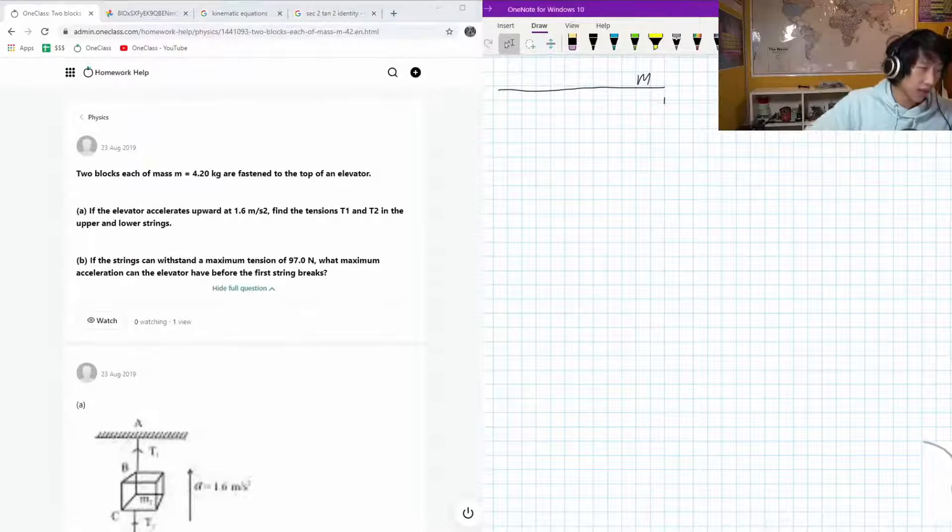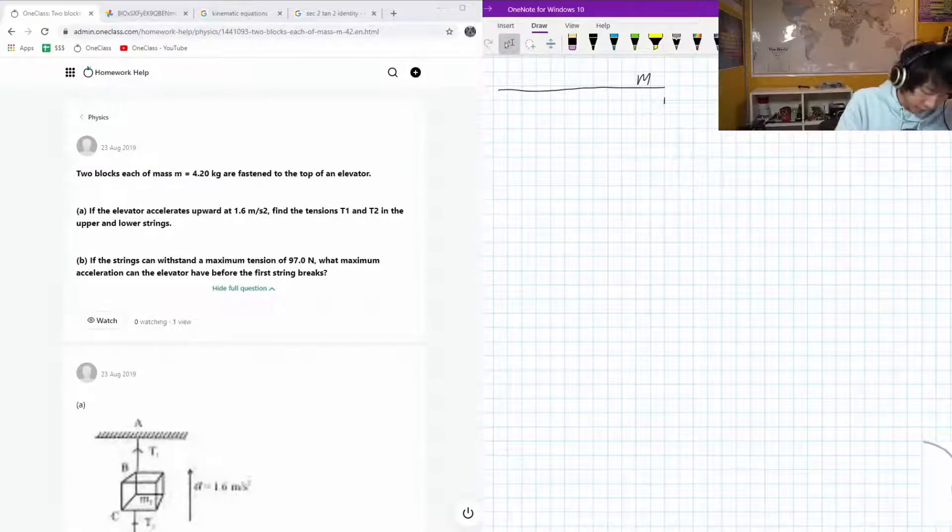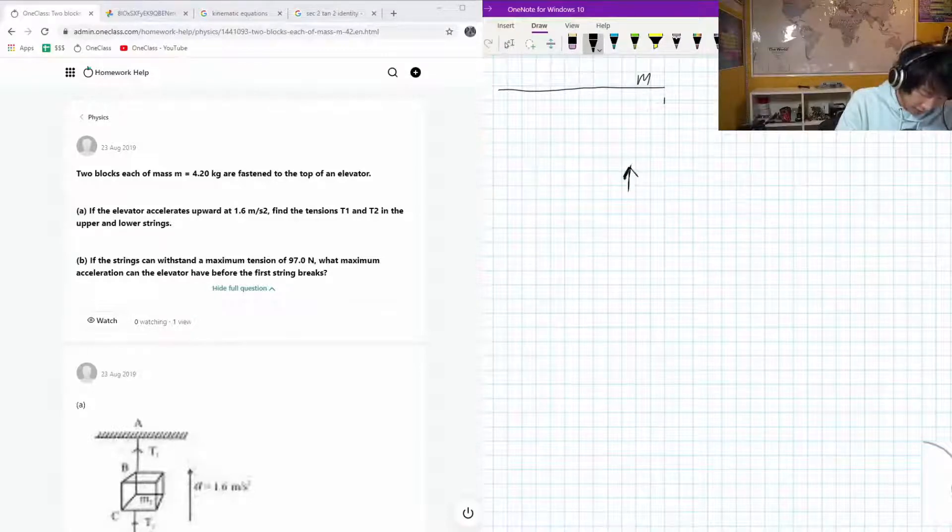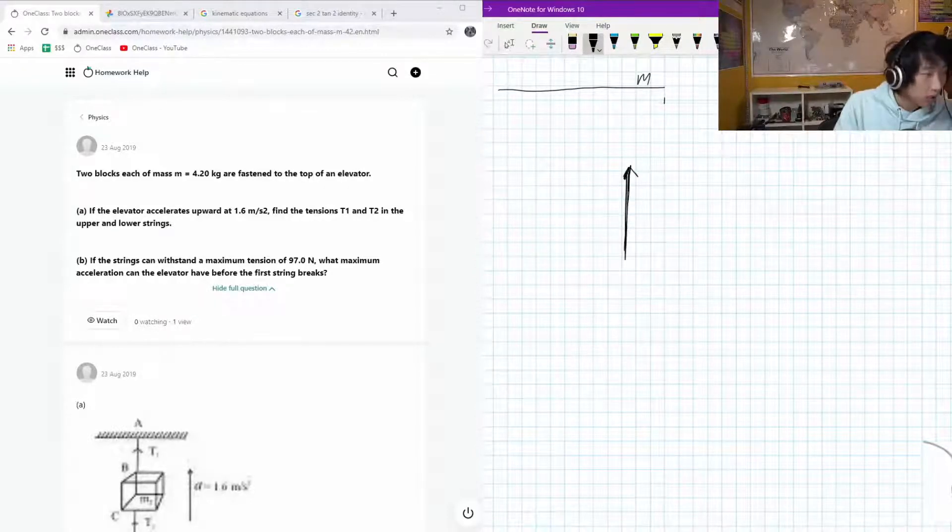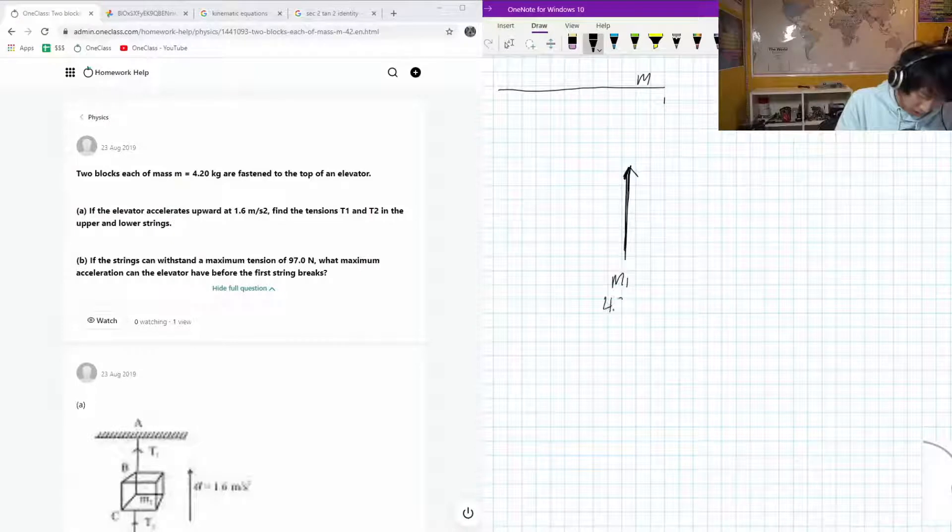Okay, so let's draw a diagram for this, and then we'll talk about part B later. So here we have a cable, and we have two blocks. Here we have M1, and this is 4.20 kilograms.